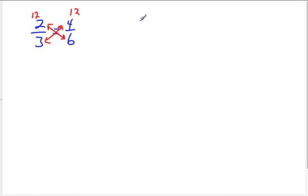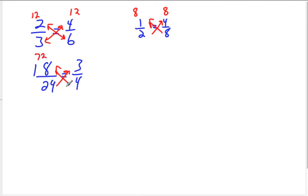So if I wrote 1 half equals 4 eighths, this is also true. 8 times 1 is 8, 2 times 4 is 8. And so to check out if 18 over 24, for instance, is equivalent to 3 fourths, we would just need to check if our cross products were equal. So 18 times 4 is 72, and 24 times 3 is 72. So these are equal. Yes, 18 over 24 is equal to 3 fourths.